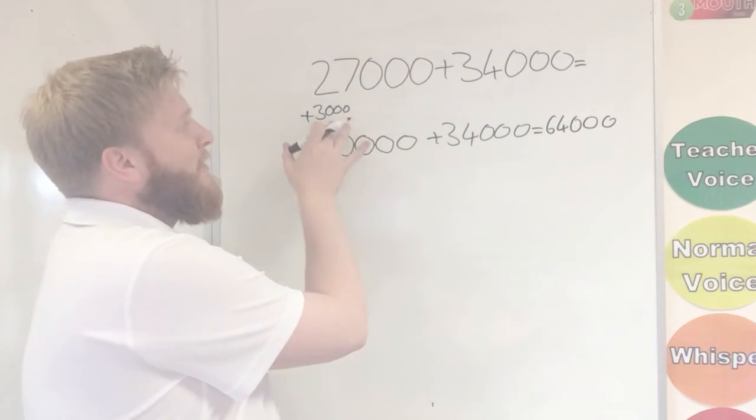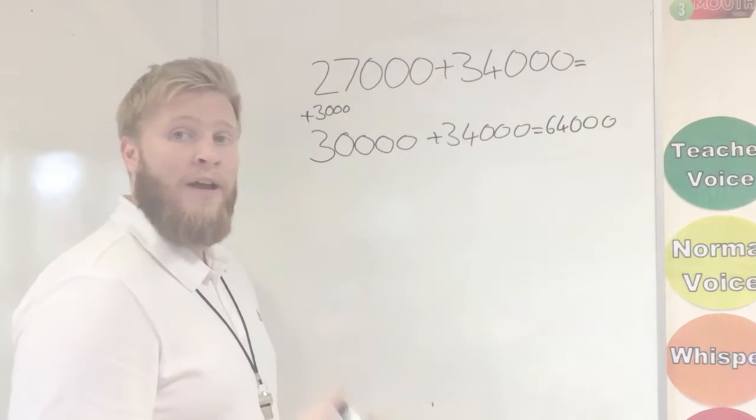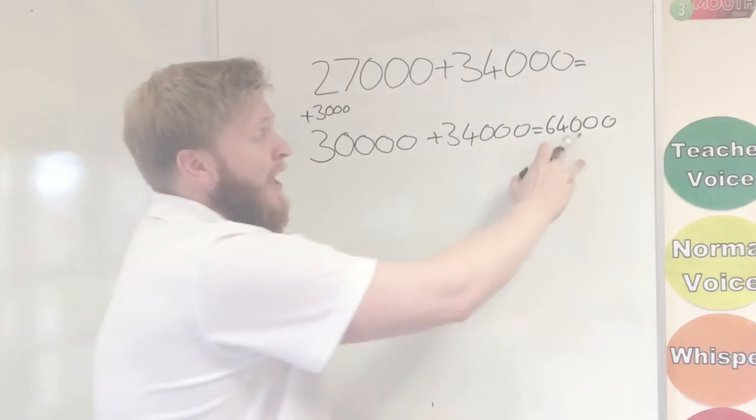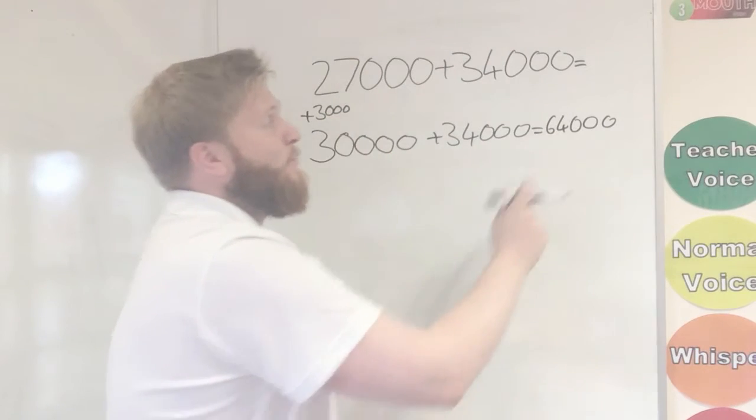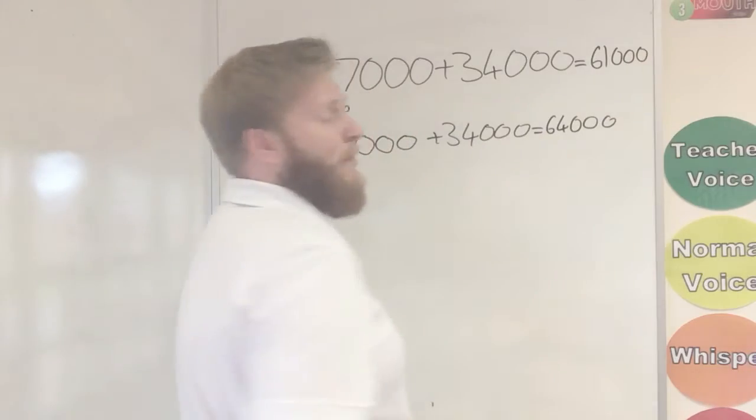Because I added 3,000 on at the start, now I have my answer, I've got to take 3,000 off to make my sum right. So 64,000, take away 3,000. I know 4, take away 3 is 1. So we get our same answer, 61,000.